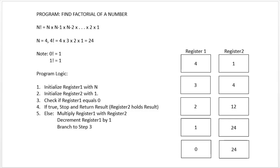If we have to find n factorial, it will be equal to n × (n−1) × (n−2) × ... × 2 × 1. For example, if n is equal to 4, then 4 factorial will be 4 × 3 × 2 × 1, which equals 24. Note that 0 factorial is 1, and 1 factorial is also 1. For all other numbers, this generalized formula applies.